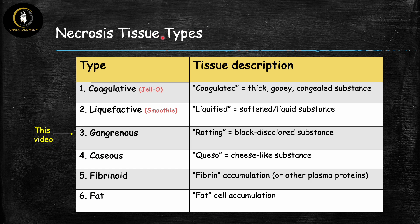Here are the six types of necrosis. The names describe what the underlying necrotic tissue looks like — they describe the hallmark feature. For example, liquefactive means the tissue is liquefied; caseous refers to the tissue being cheese-like; fat means there is fat cell accumulation. Each type has its own specific underlying pathophysiology, specific diseases that cause it, and characteristic histopathology — the kind of things you need to compare and contrast to answer test questions.